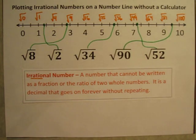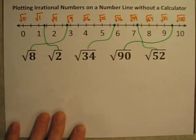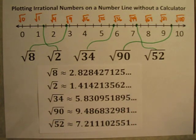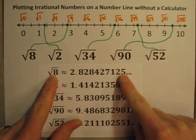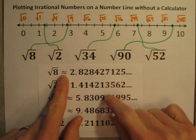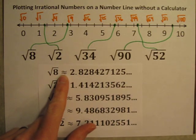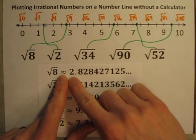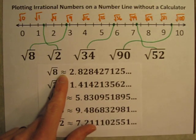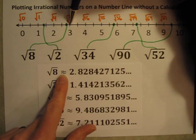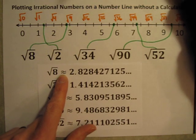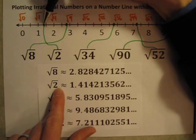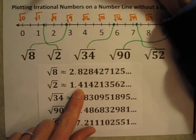Now let's see how we did. Before I made this video, I actually got up my calculator and got these values out to ten decimal places. Even to ten decimal places, this is still just an approximation — which is why I have the approximately equal to sign — because really these numbers go on forever. The square root of 8 is about 2.8. Where did I put it? I put it at greater than two and a half, a little less than three — that looks like about 2.8. Square root of 2 is about 1.4; I have it as a little bit less than 1.5, so 1.4 sounds just right.